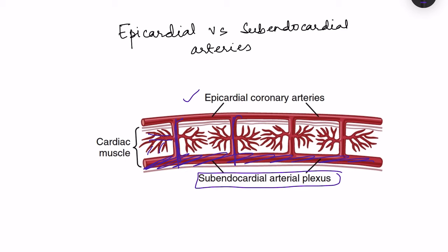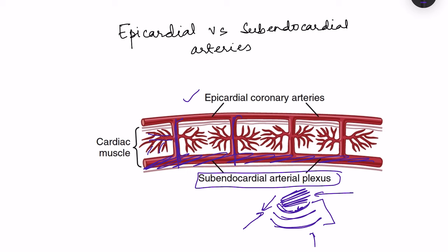The blood in the heart chambers is not sufficient to supply all layers of the heart. There is endocardium, myocardium, and epicardium. The blood in the chamber can supply oxygen only to a very thin layer of the endocardium; for the rest, coronary arteries are essential. During contraction of the heart, the subendocardial arterial plexus gets compressed because it is within the muscle just below the endocardium, decreasing blood supply especially during systole.